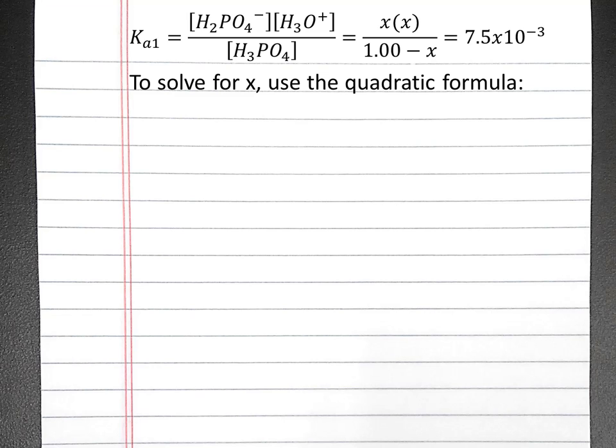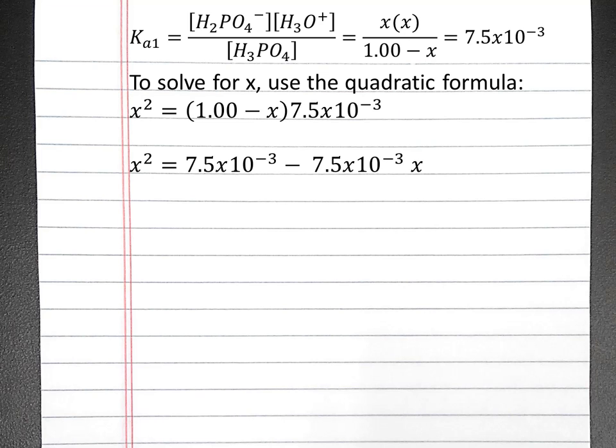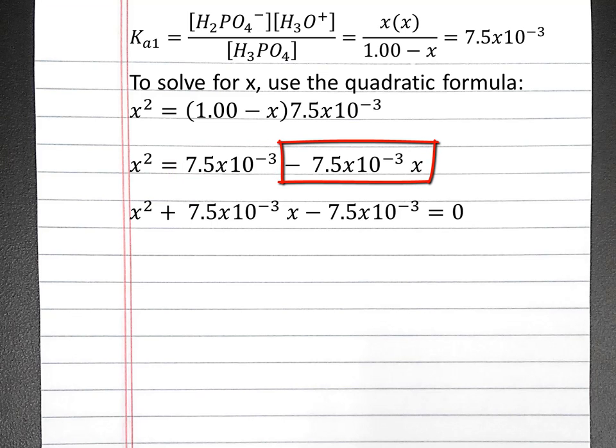So we have to solve for x using the quadratic formula. If we multiply both sides by 1 minus x, we'll get x squared equals 1 minus x times 7.5 times 10 to the negative third. After distributing and getting all terms to one side, we can subtract 7.5 times 10 to the negative third and add 7.5 times 10 to the negative third x to both sides.